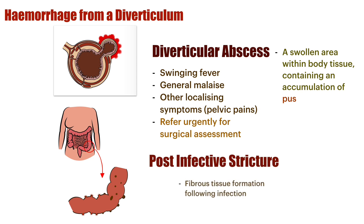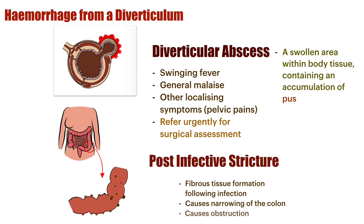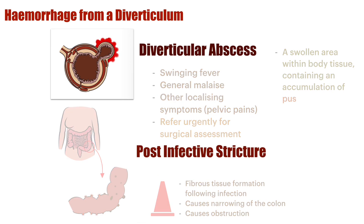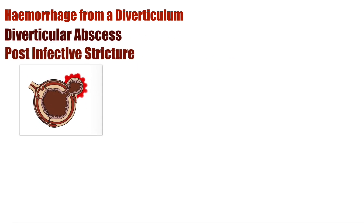We can also develop a post-infective stricture — fibrous tissue formation following an infection. Similar to a scar, fibrous tissue develops and forms a narrowing of the colon, causing obstruction. The hallmarks of obstruction are not passing gas, not passing stool, vomiting, abdominal pain, and bloating. These are really troublesome signs that need to be addressed.